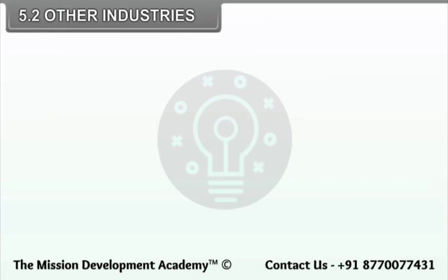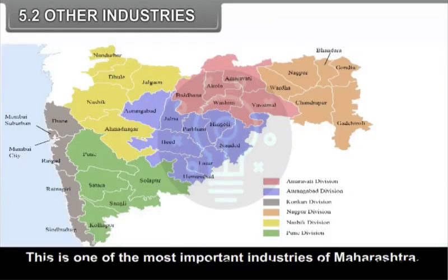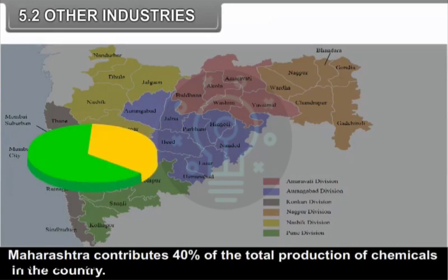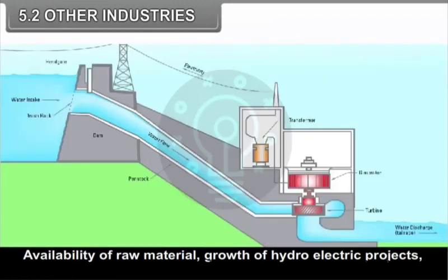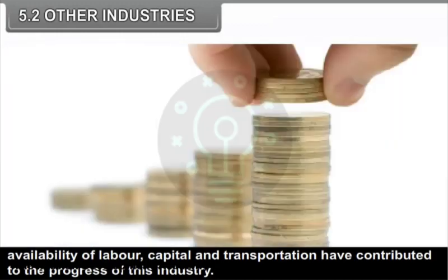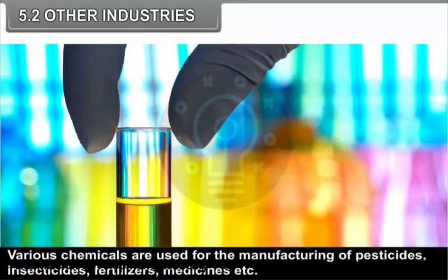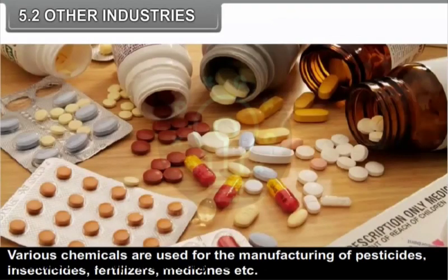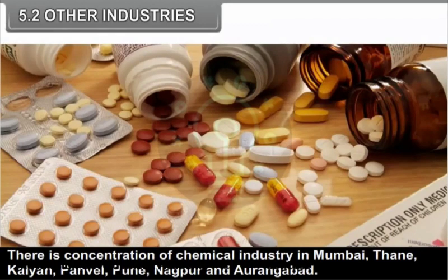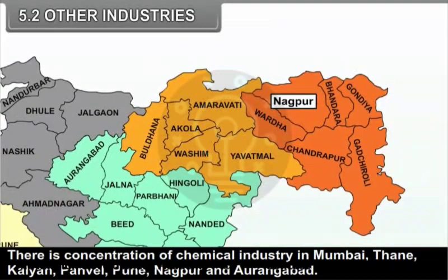The chemical industry is one of the most important industries of Maharashtra. Maharashtra contributes 40% of the total production of chemicals in the country. Availability of raw material, growth of hydroelectric projects, availability of labour, capital, and transportation have contributed to the progress of this industry. Various chemicals are used for manufacturing of pesticides, insecticides, fertilizers, and medicines. There is a concentration of chemical industry in Mumbai, Thane, Kalyan, Panvel, Pune, Nagpur, and Aurangabad.